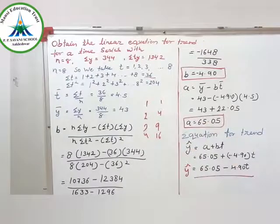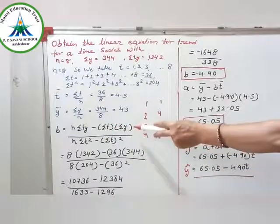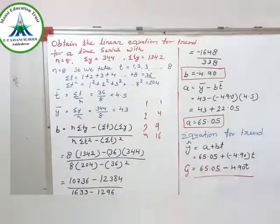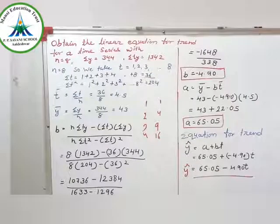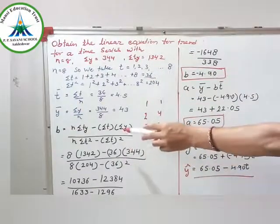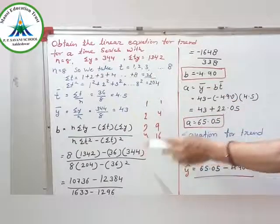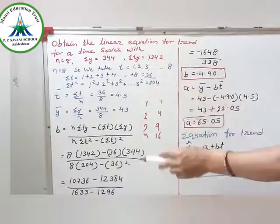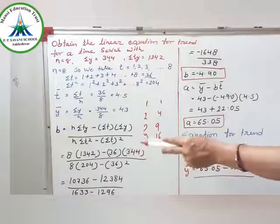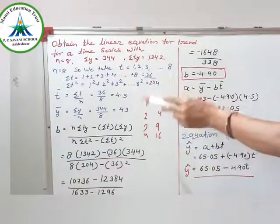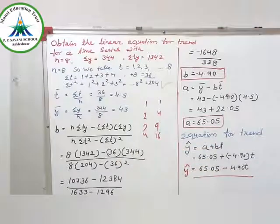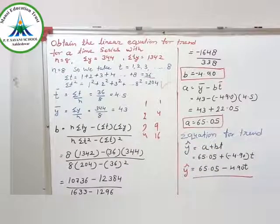Now all the values we have to put in this formula. The formula is b equal to n sigma ty minus sigma t into sigma y upon n sigma t square minus sigma t whole square. Now look, n is 8, sigma ty is 1342, minus sigma t, which we found out is 36, into sigma y, which is 344. Upon n is 8, sigma t square we found out is 204.